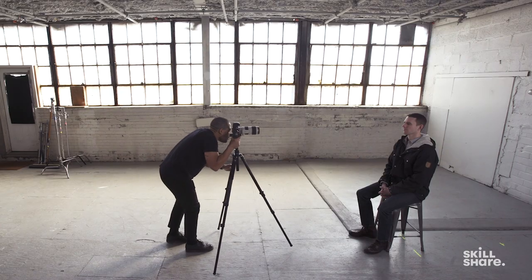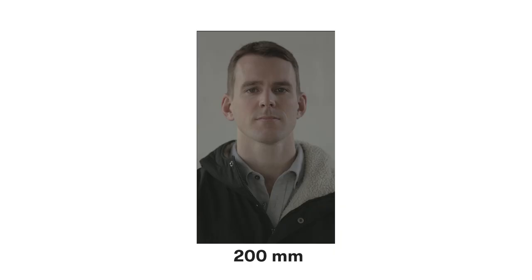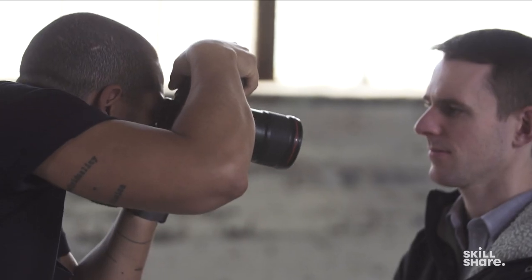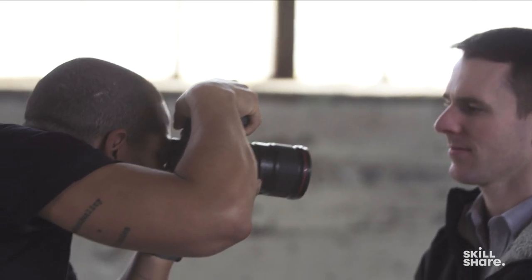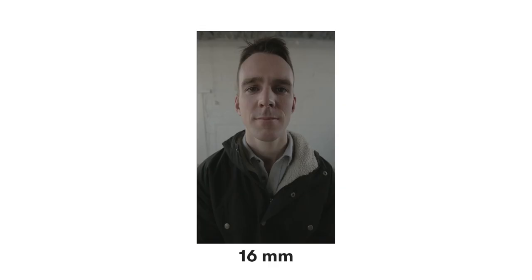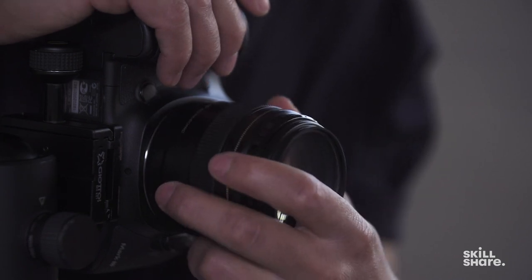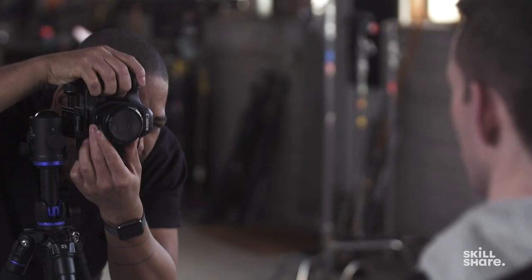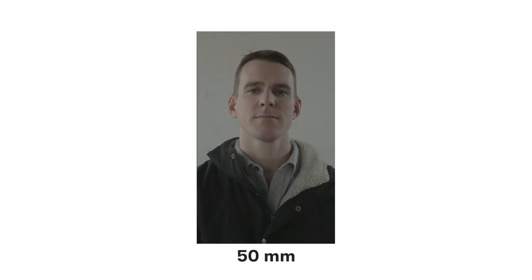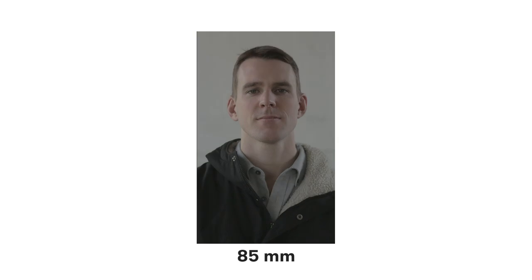At 200 millimeters you get a flattening effect on the face, and the opposite happens as you go to the wide end. Generally we recommend using a 50 millimeter or an 85 millimeter lens for portraits. It makes the face look more true to form, it's more flattering, and it's just going to give you an overall better picture.